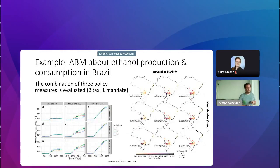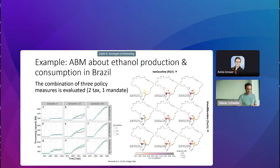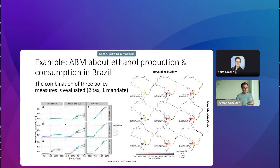Here is an example of an agent-based model used to project bioethanol production in Brazil based on different tax policies. Under a certain tax policy, ethanol production goes up, and on the right-hand side you can see where in the country that might happen based on a particular policy. Clearly this is an example of a projection, not a prediction, because we don't know the probability of any of these scenarios — only conditionally on a particular tax or mandate.